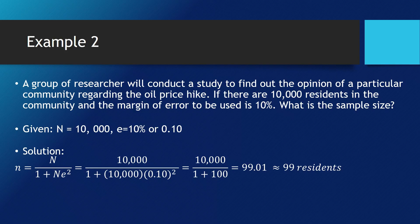Then, we are going to operate this 10,000 divided by 101 and we will get an answer of 99.01. Again, we are not going to have decimal since these are residents. These are whole numbers. We are going to round it off to the nearest whole number.